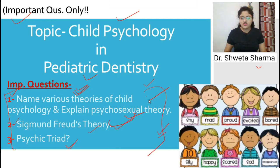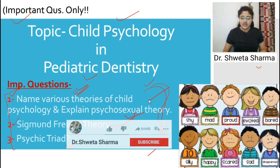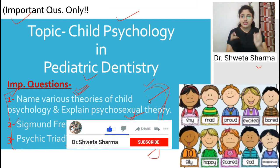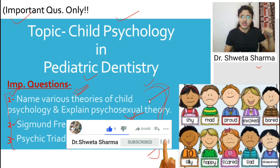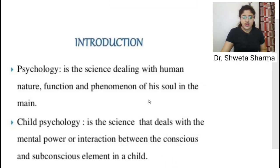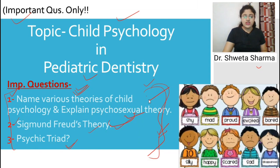We are going to cover these three today. Before starting, if you are new to the channel, make sure to subscribe and press the bell icon so that you can get every update. Now let's get started. The first question is: name various theories of child psychology and explain psycho-sexual theory.